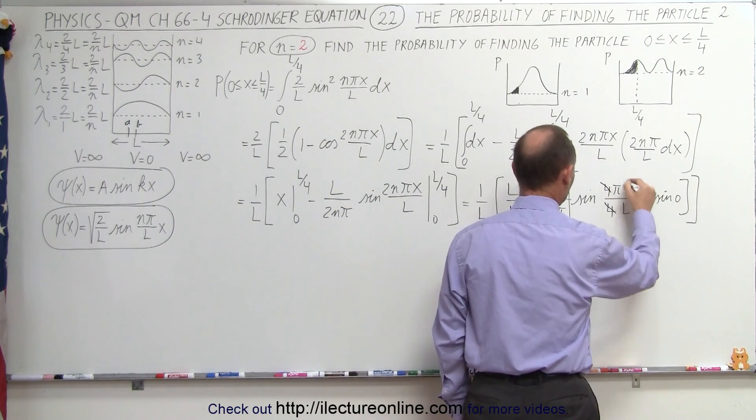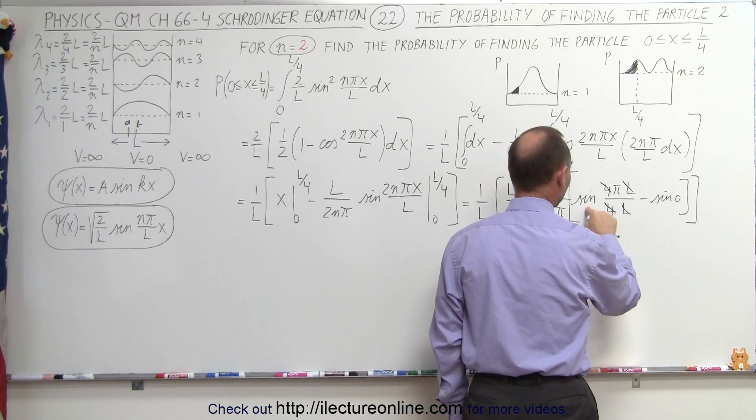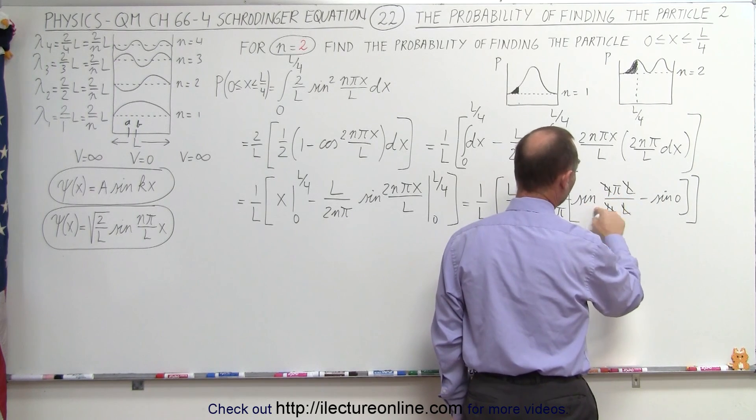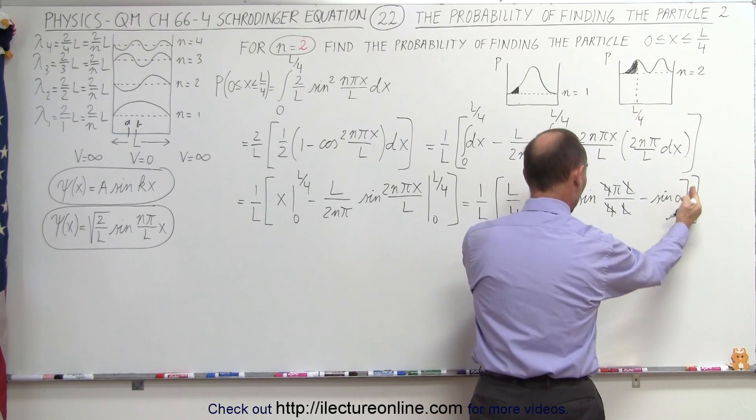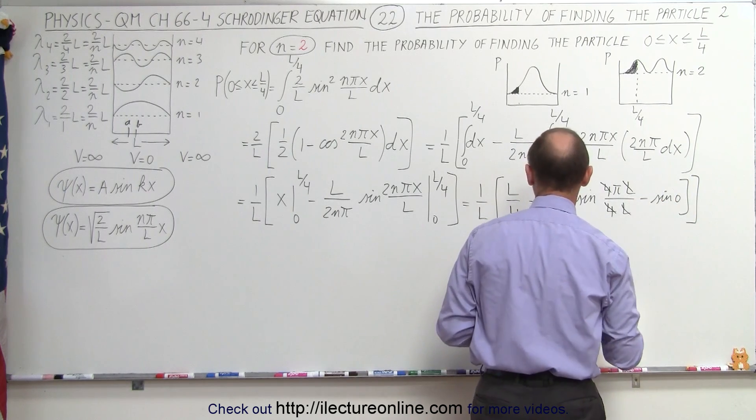So here we have a 4 and a 4, and L and L, so we get the sine of pi, well, that's 0, minus the sine of 0, which is 0 as well. So this whole part right here goes completely to 0.